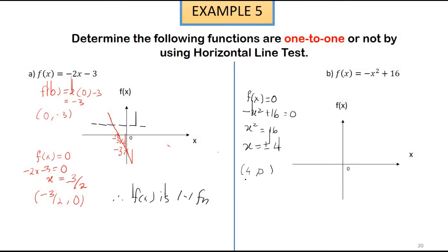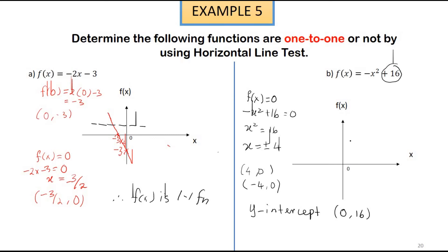From this function, the y-intercept is 16, giving the point (0, 16). Now we can sketch the graph. So we have -4 on the left, 4 on the right, and 16 at the top — a downward-opening parabola.